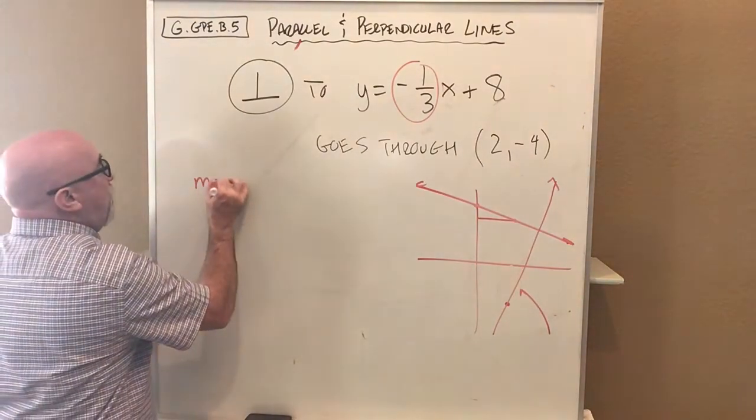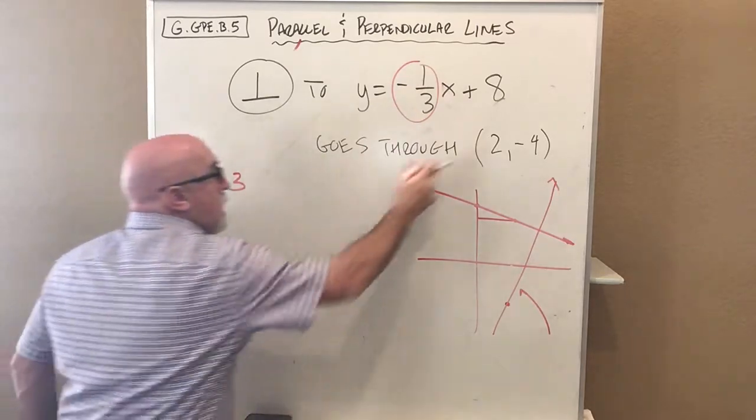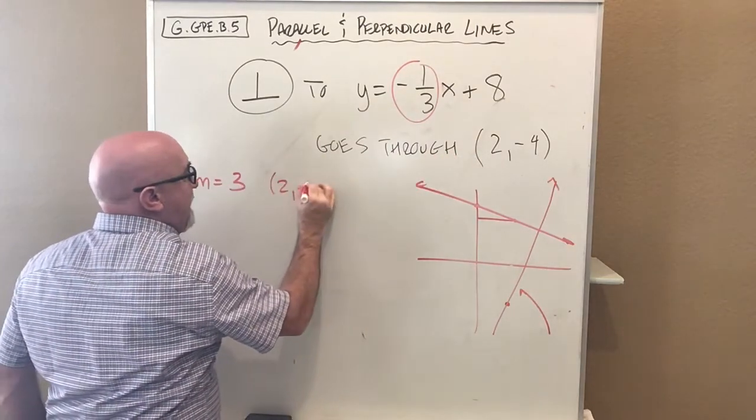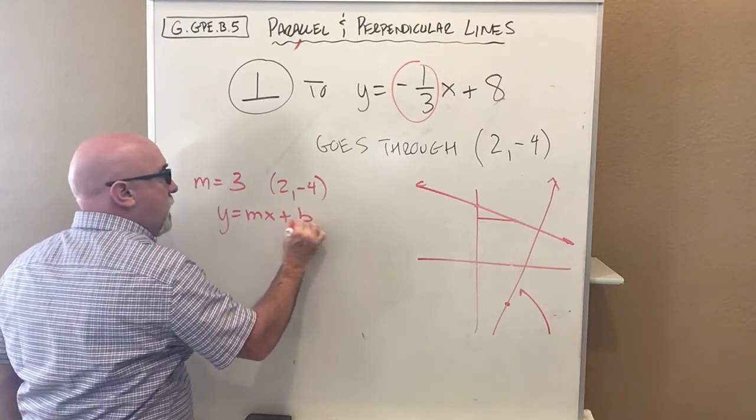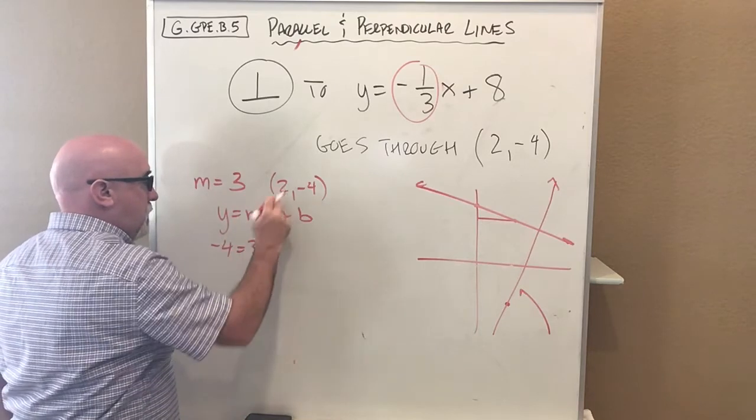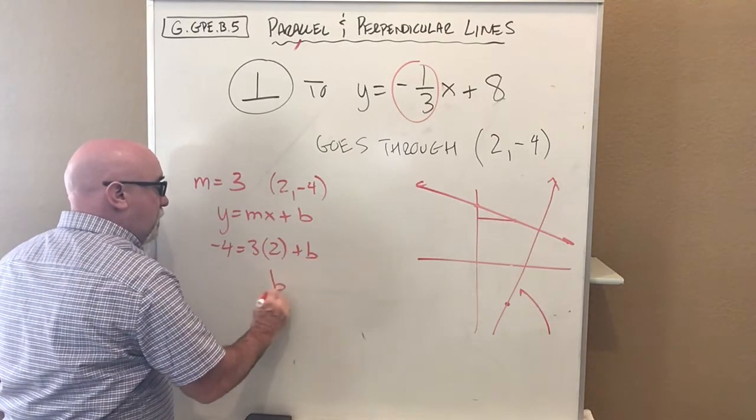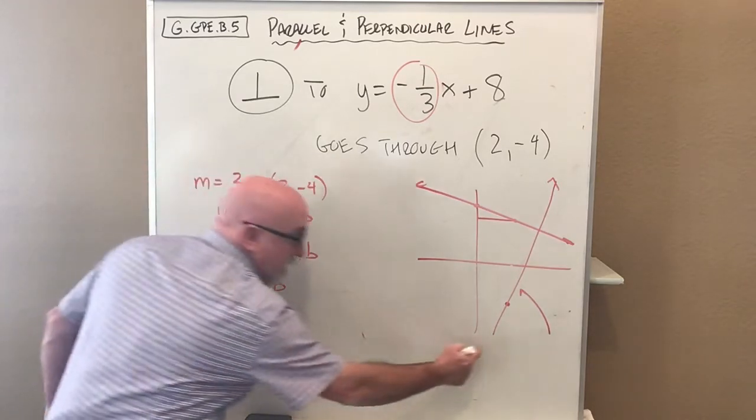Our slope will be the negative reciprocal of this, which is 3. And we're going to go through (2,-4). Let's get this into our equation. Negative 4 goes in here, 3 here, 2 here. When we move the 6 over, it becomes negative 10. That makes sense.